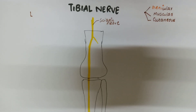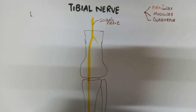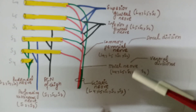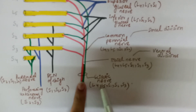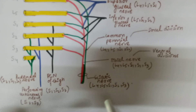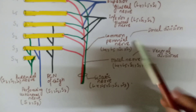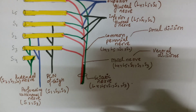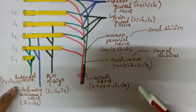Today I will tell you about the tibial nerve. The tibial nerve is a branch of the sciatic nerve. As we have already seen in the sacral plexus, the sciatic nerve is a combination of two nerves: the tibial nerve and the common peroneal nerve. At the superior border of the popliteal fossa, the sciatic nerve again divides into the tibial nerve and the common peroneal nerve.